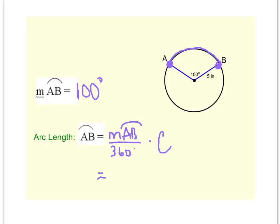So we've already got the measure of arc AB is 100, so 100 over 360. And now we need to find the circumference of our circle. So remember that circumference is equal to pi times diameter. And if the radius of this circle is 5, the diameter of this circle would be 10.